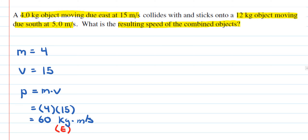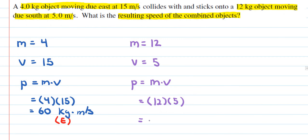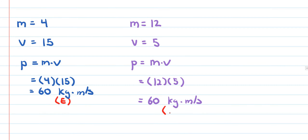Now we can calculate the momentum of the second object. The second object has a mass of 12 kilograms and its velocity is 5 meters per second in the south direction. Momentum is mass times velocity, so 12 times 5 gives a magnitude of 60 kilogram·meters per second, and this direction is going south.